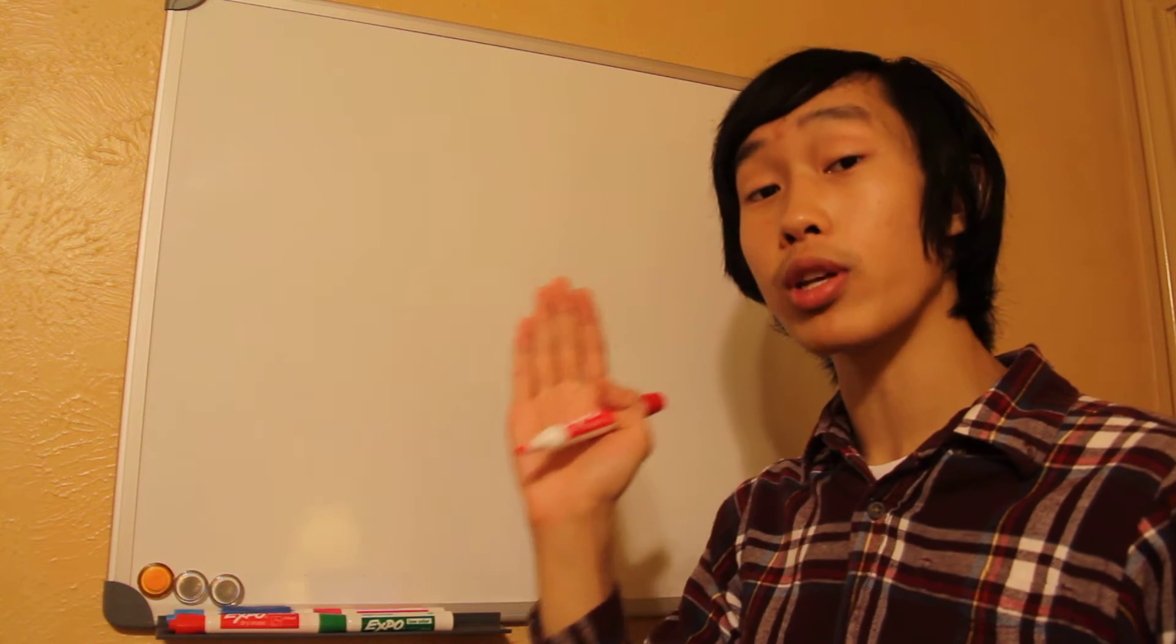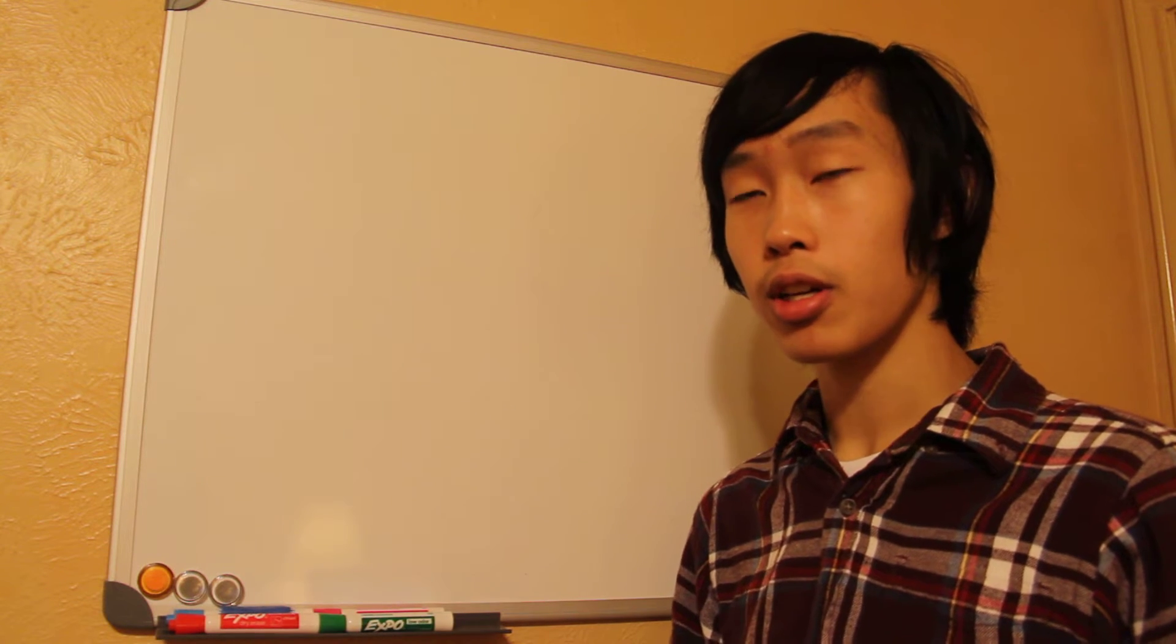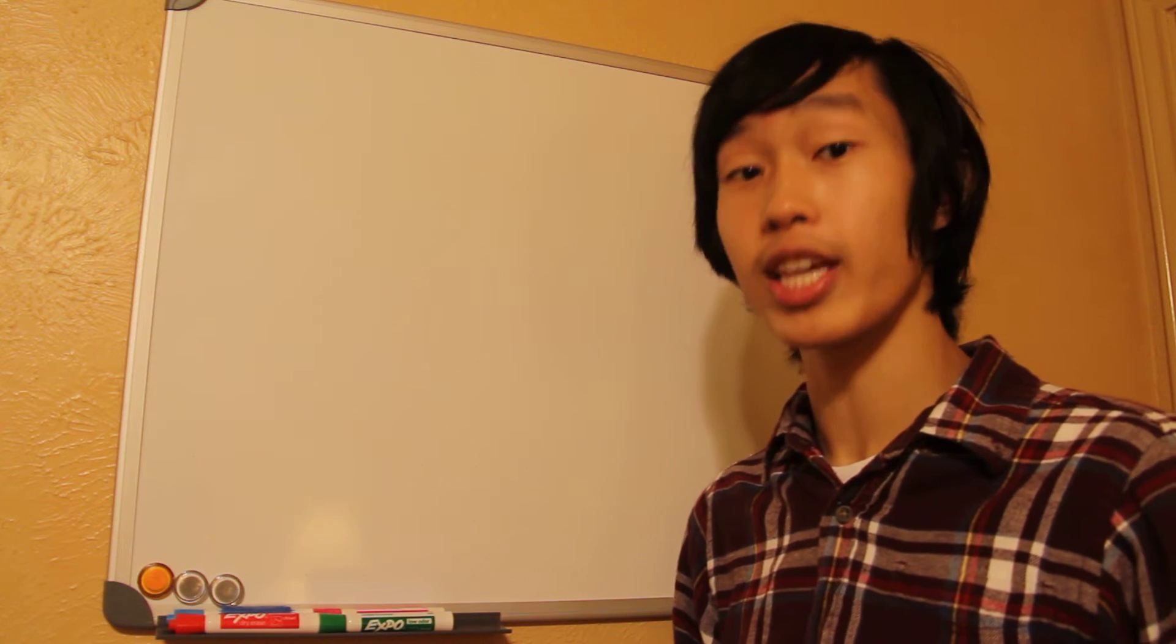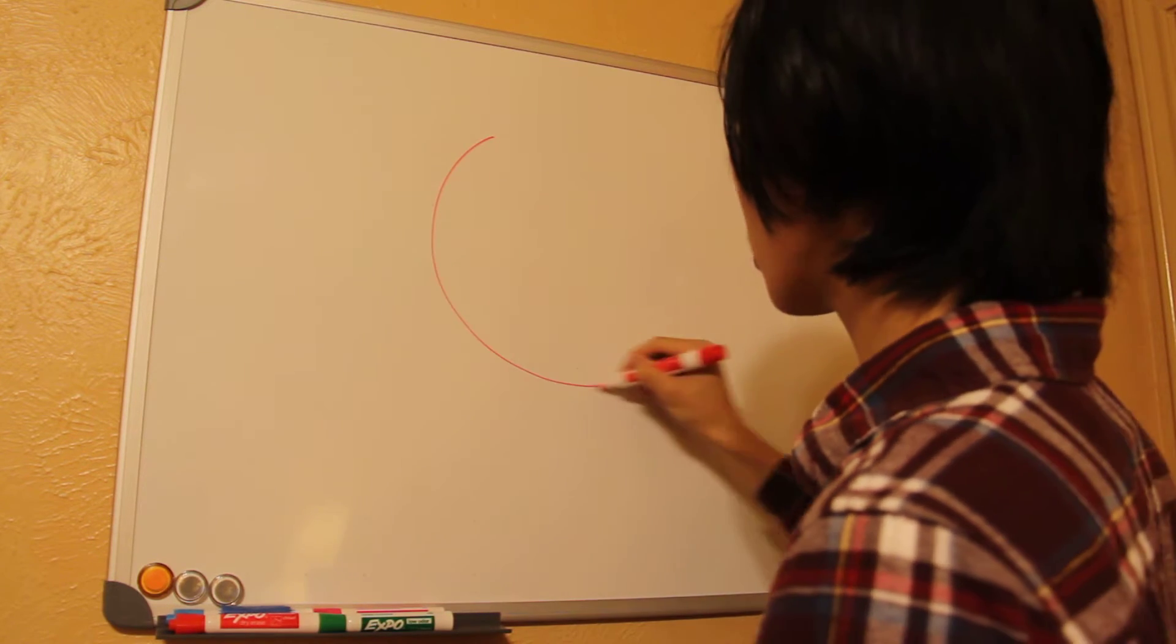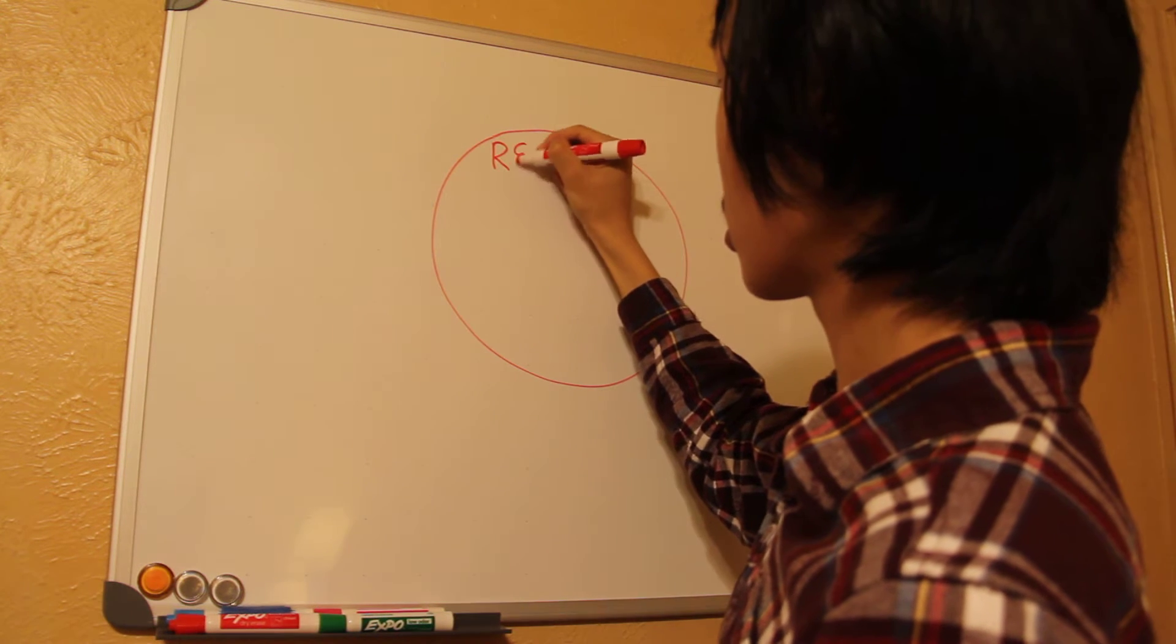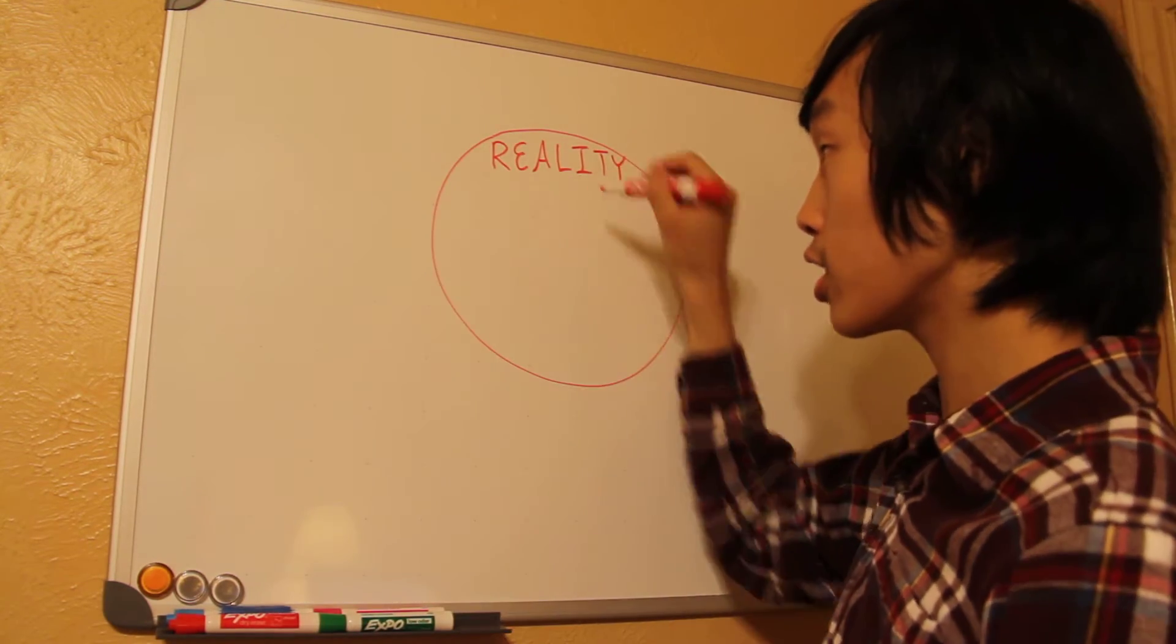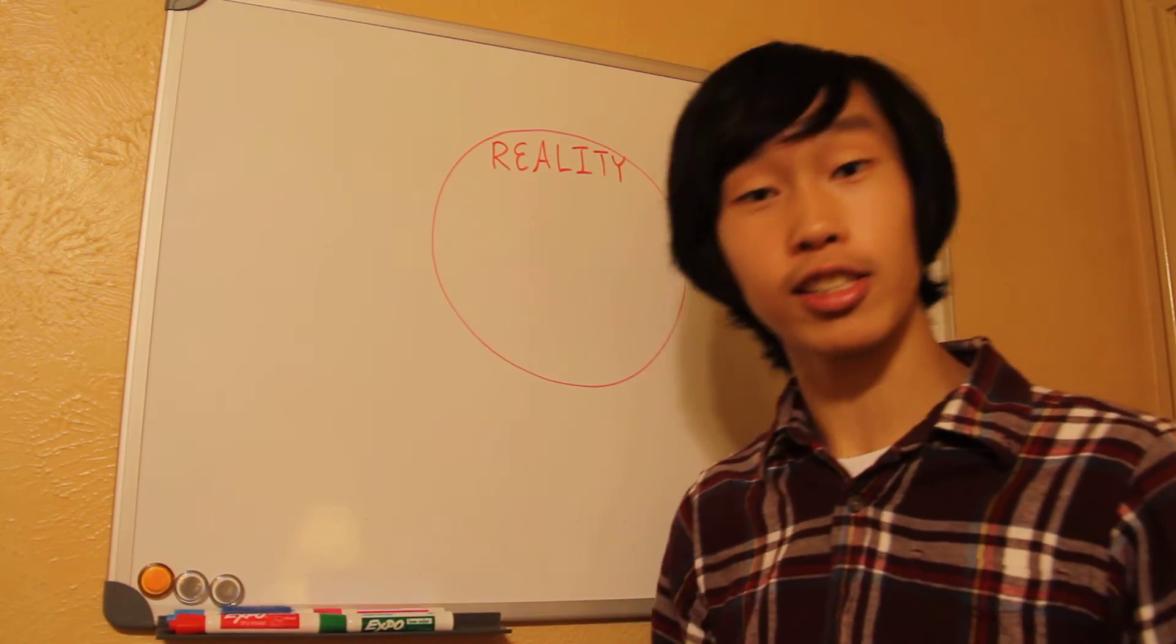Because the only thing that we know exists, assuming if you're not solipsist, is reality. Anything that's real. I mean, even if you're a solipsist, anything that can be proven to be real exists. And we call that reality. So let's draw a circle. And I'm going to label it reality. This is reality. Everything inside here is real. It exists. Everything outside doesn't exist.